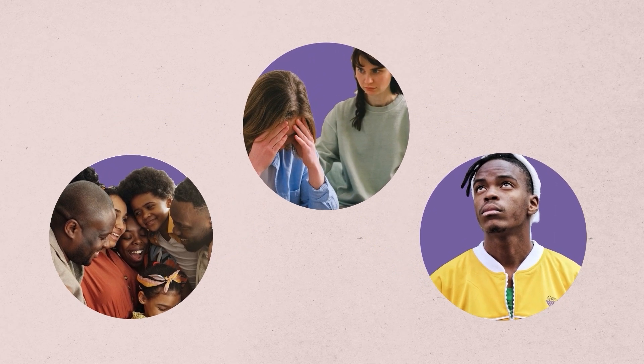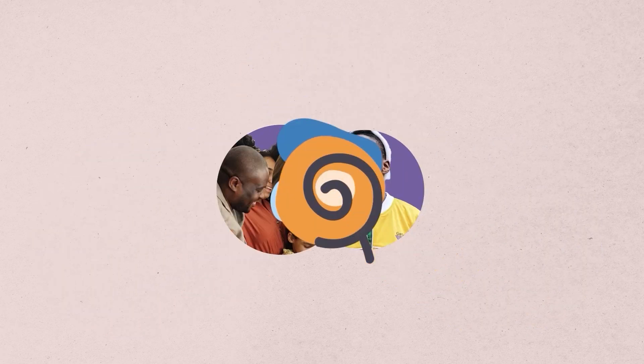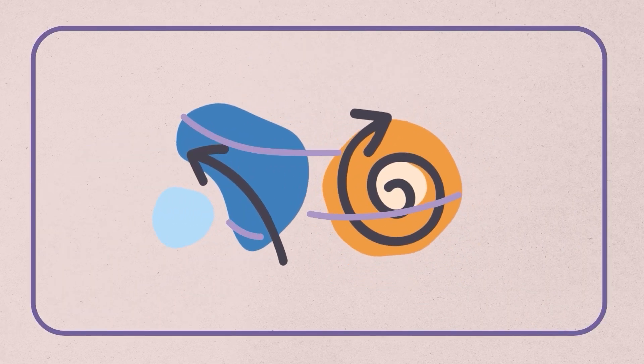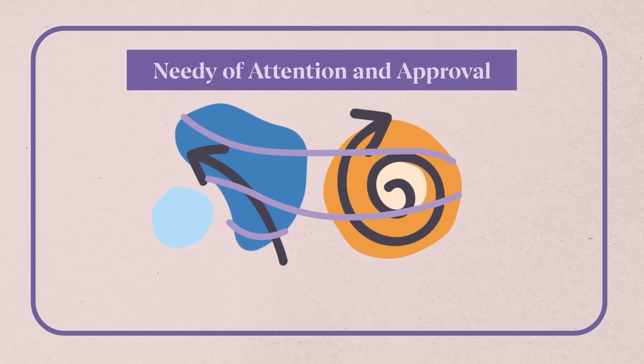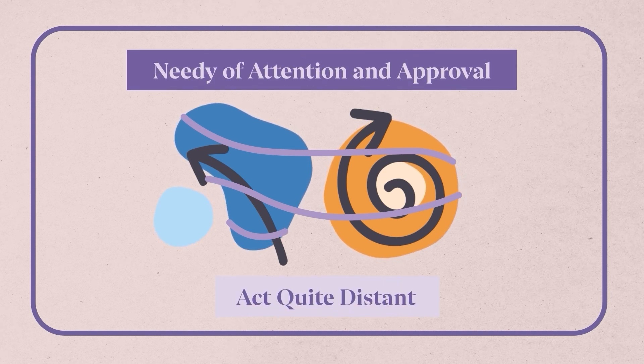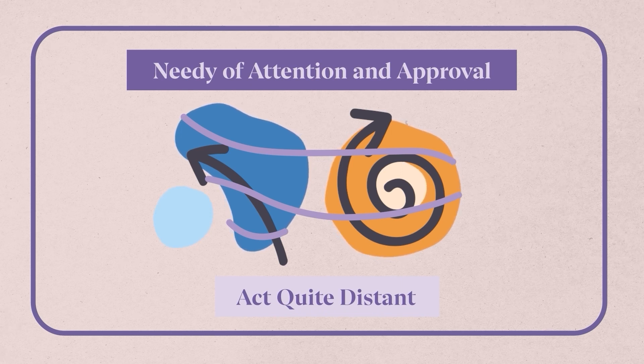Someone with a disorganized attachment style is prone to both avoidant and anxious behaviors. Depending on your mood and situation, you may on occasion be a little needy of people's attention and approval, but at another time, you might push them away and act quite distant.